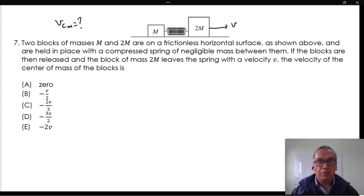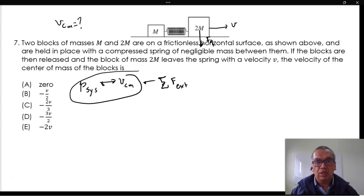Remember that the momentum and therefore the velocity of the center of mass will only change if there are external forces doing work on the system. However, the horizontal surface is frictionless. The only external forces are the gravitational and normal forces.